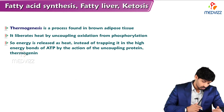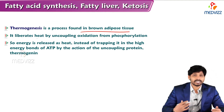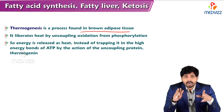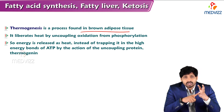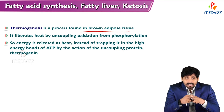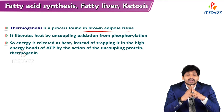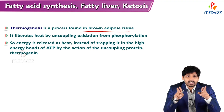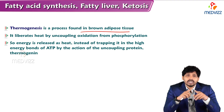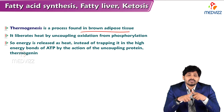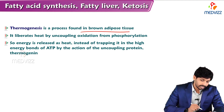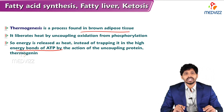Thermogenesis is a process found in brown adipose tissue - it liberates heat by uncoupling. In mitochondria, the electron transport chain is normally a coupled process: oxidation and then phosphorylation - that is why it is called oxidative phosphorylation. In brown adipose tissue, there is no coupling of oxidation and phosphorylation. Phosphorylation is the site where ATP is generated, but here oxidation alone takes place and the rest of the energy is dissipated as heat. Energy is used as heat instead of being trapped in the high energy bonds of ATP, by the action of uncoupling protein.